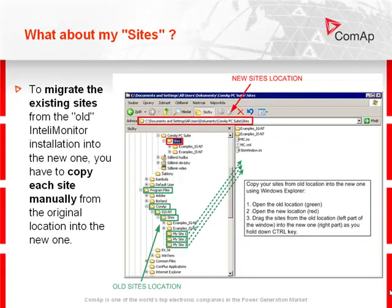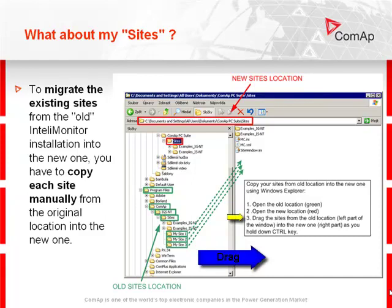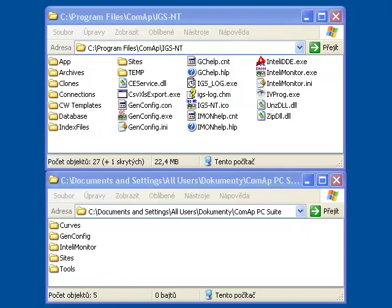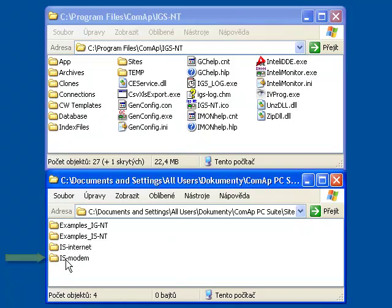To migrate existing sites from the old IntelliMonitor installation into the new one, you have to copy each site manually from the original location into the new one. Open the old location and open the new location, then drag the sites from the old location into the new one while holding down the Ctrl key. Here is an example of migrating sites: open the old location and open the new location for PC Suite.